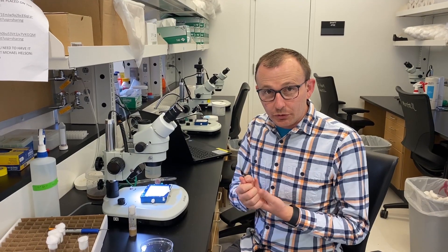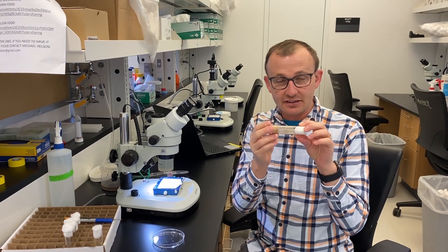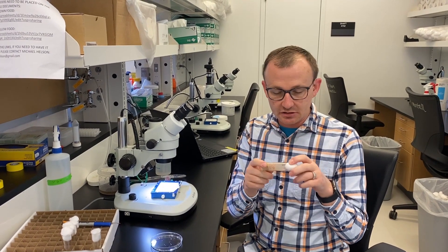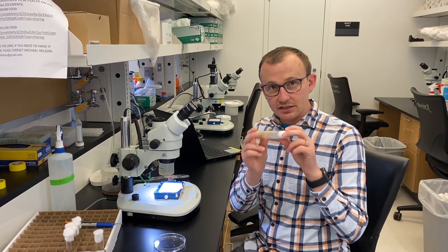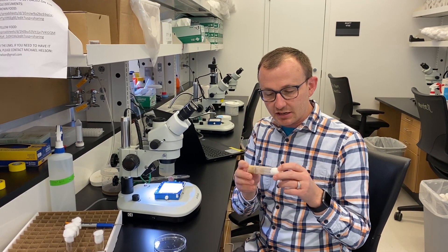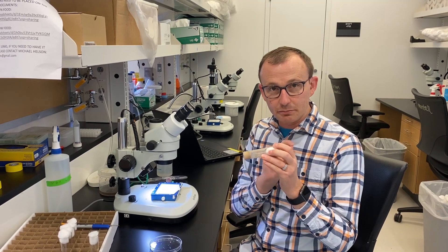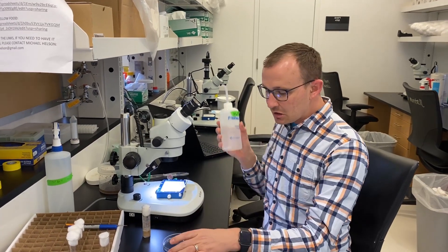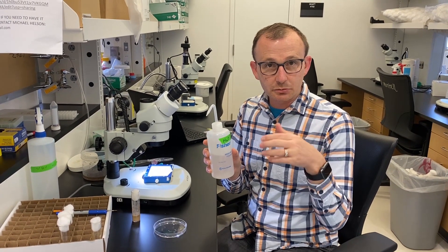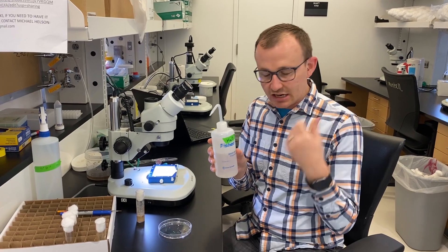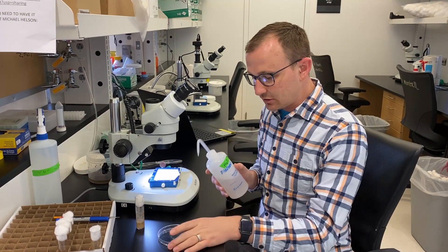Alright, so the way that we want to go about selecting the pupae is first we want to find a vial and dump any flying animals that may have been in there. Another nice way to check for virgins. I've recently dumped this vial so I'm ready to isolate some of the dark pupae that have crawled up the side of the wall.